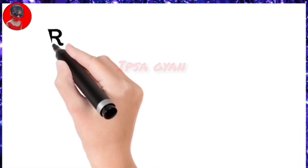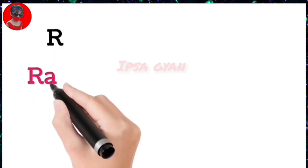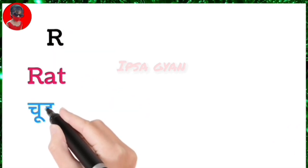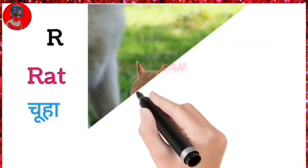R for rat, rat means chua. R for rat, rat means chua.